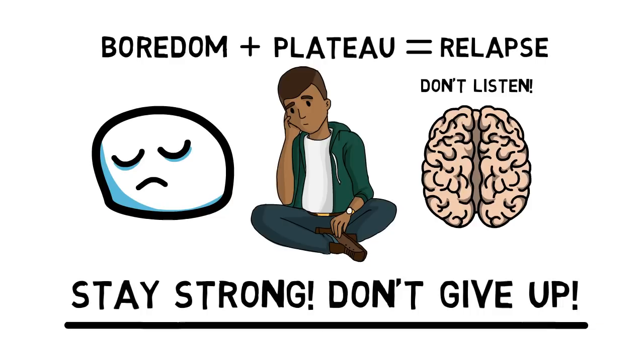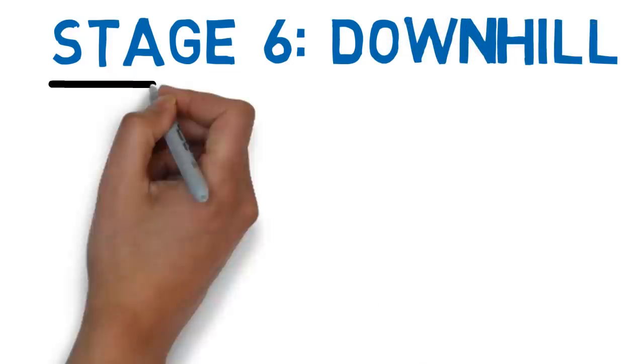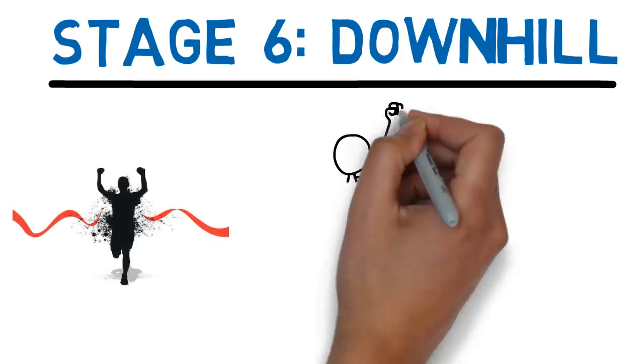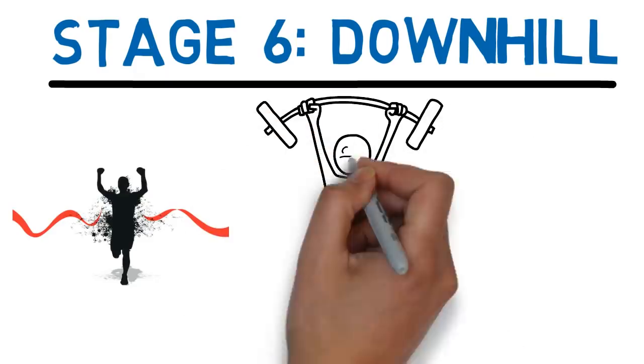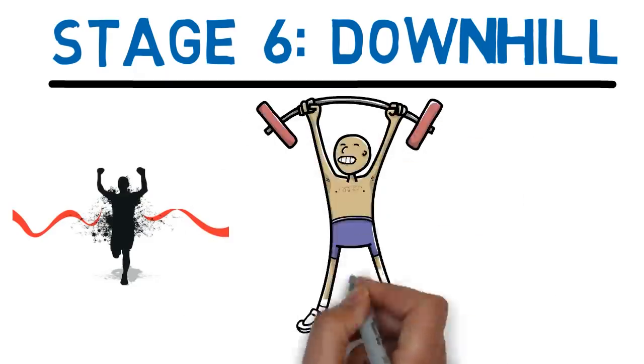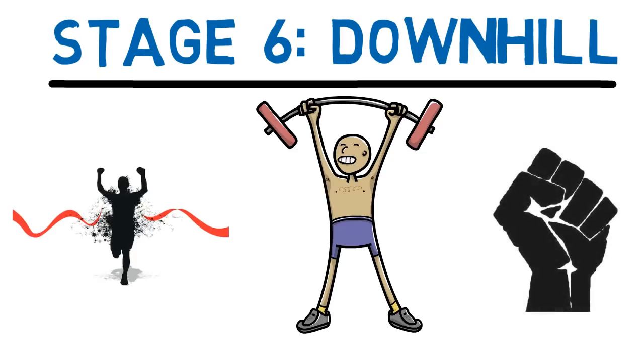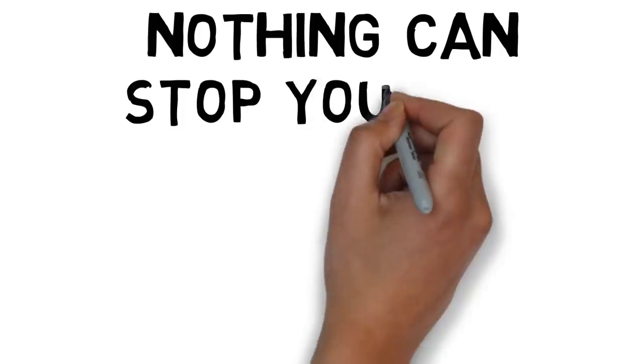Stage six: downhill. You did it! You completed the full 90-day cycle required to fully reset from PMO. Not only have you obtained and maintained all the rewards and benefits from NoFap, you have shown that you have the strength and the determination to stay on NoFap no matter how difficult it gets. You have proven to yourself that you can do this no matter how hard it gets, even when you are not motivated.